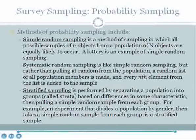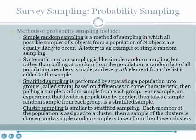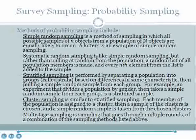Stratified sampling is performed by separating a population into groups called strata based on differences in some characteristic, then pulling a simple random sample from each group. For example, if an experiment divides a population by gender and then takes a simple random sample from each group, this is a stratified sample. Cluster sampling is similar: each member of the population is assigned to a cluster based on a characteristic or randomly, then a sample of the clusters is chosen via simple random sample. Multi-stage sampling is a generalization of cluster sampling, involving multiple rounds of sampling using any combination of the methods above.